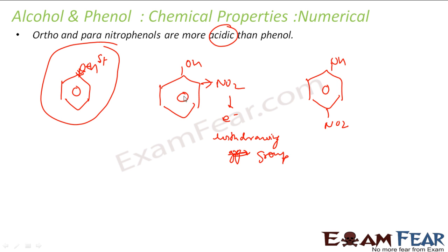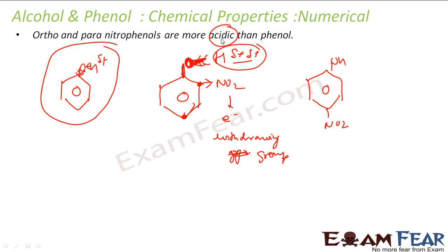In ortho and para nitrophenol, the nitro groups are at the correct positions to withdraw electrons more effectively. Phenol now needs more electrons and demands more from the oxygen. Since oxygen's only source is hydrogen, it sucks electrons from hydrogen all the more, making it carry more positive charge.